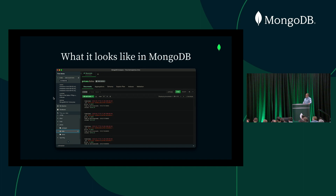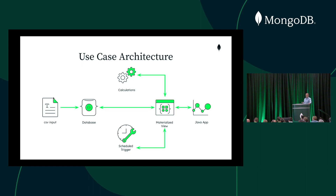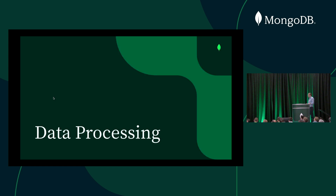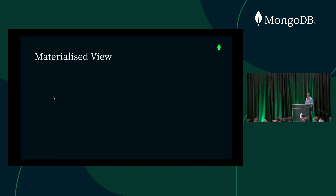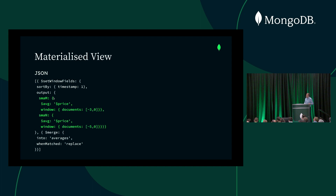We've moved data from a CSV file to MongoDB. Now that we have raw data in place, we need to process it, and for that we're going to use a materialized view. There's an aggregation pipeline, and the bit highlighted in green is where all the magic happens — this is where we calculate our moving averages.